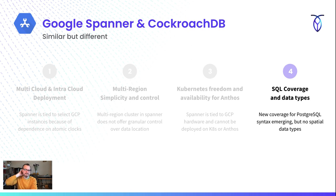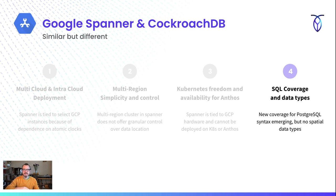And then finally, some of the SQL coverage. Spanner has done some really great work over the past couple of months in terms of becoming Postgres compliant. But things like spatial data and certain data types are still not covered in Google Spanner. So it really comes down to your workload and what you want to accomplish. That's four quick ways in which we're a little bit different than Spanner. Again, a great database, but various reasons why you would use Cockroach over that.